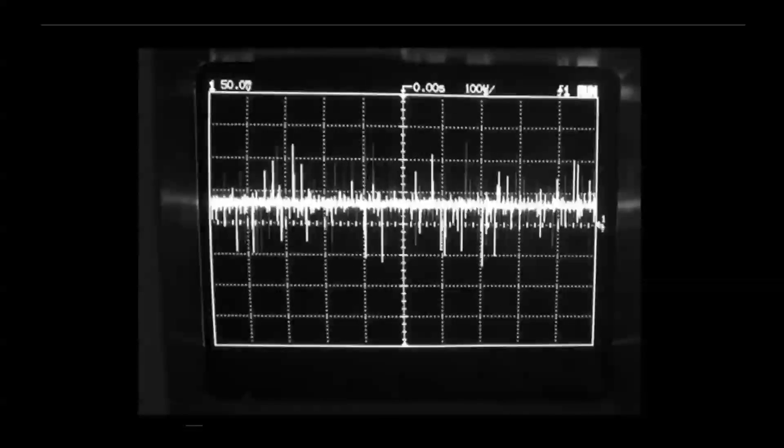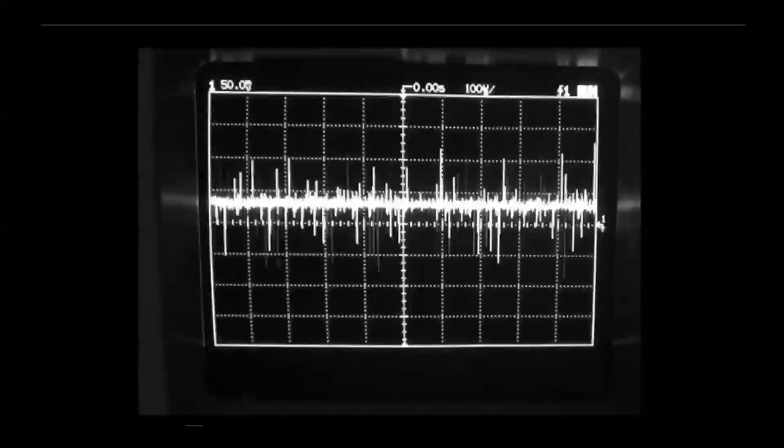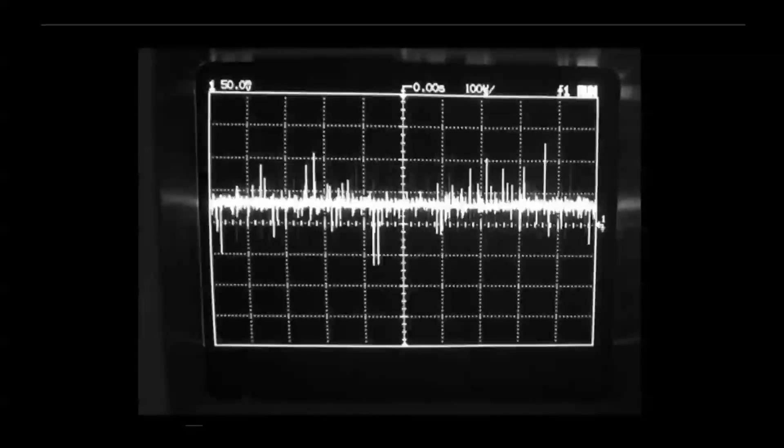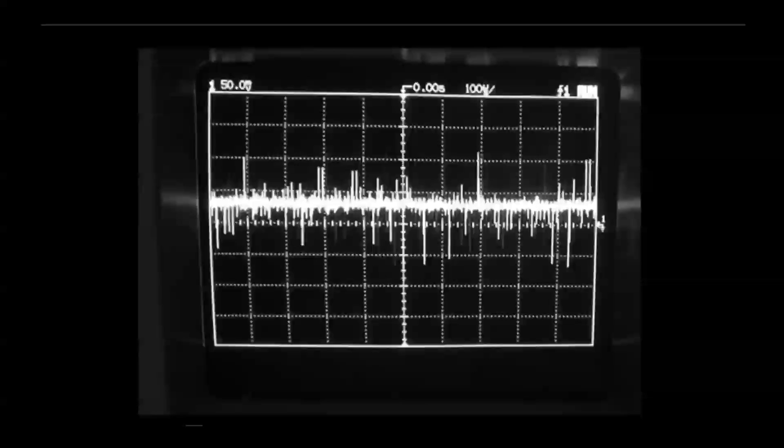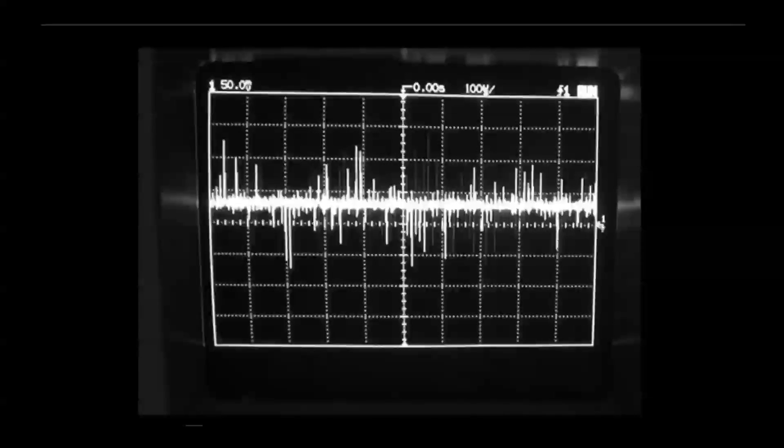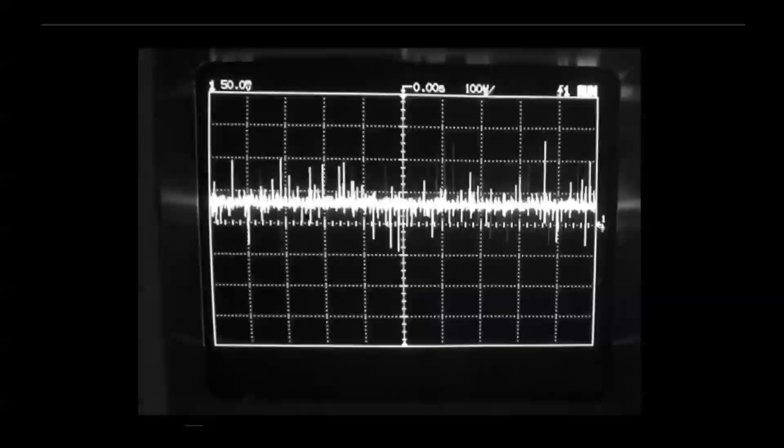As you can see, the graphic of the oscilloscope covers 5 squares. Therefore, the voltage of current that goes to the ECAT is 250 mV.